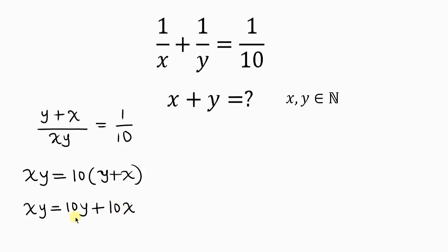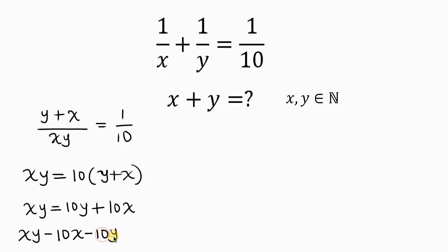Our next step is to move all terms on the right hand side to the left so that we have zero on the right. So we have xy minus 10x minus 10y equals zero.